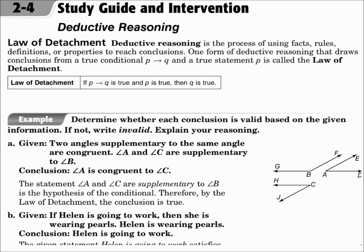Deductive reasoning is the process of using facts, rules, definitions, or properties to reach conclusions. One form is the law of detachment. The law of detachment says if P to Q is true, and P is true, then Q is true.